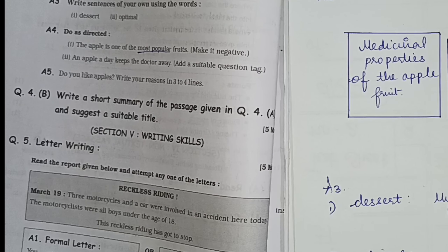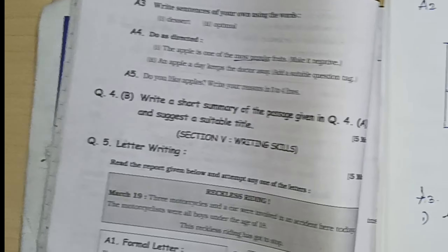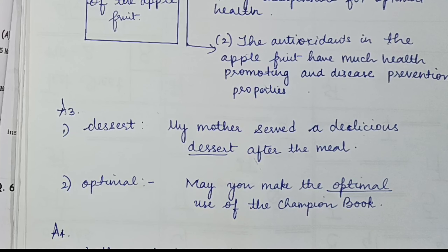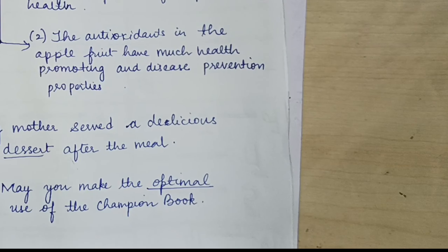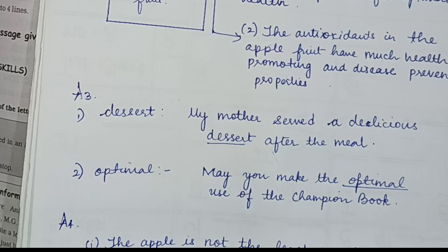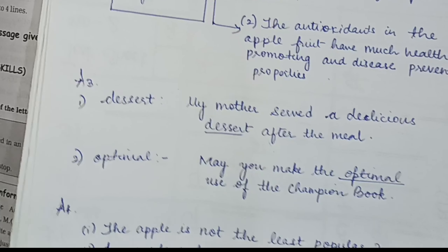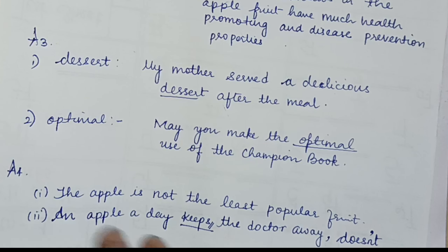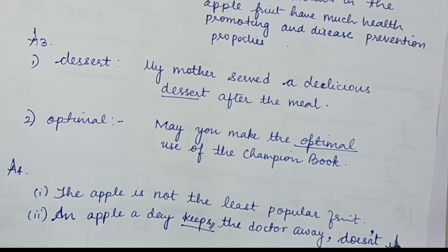For adding a question tag: 'An apple a day keeps the doctor away' — write the full sentence, then add a comma. Look at the verb 'keeps' — it has an S form, so it becomes 'doesn't'. Since there is no negative in the sentence, we add 'not'. Apple is a thing, not a person, so the tag is 'doesn't it?' — giving: 'An apple a day keeps the doctor away, doesn't it?'